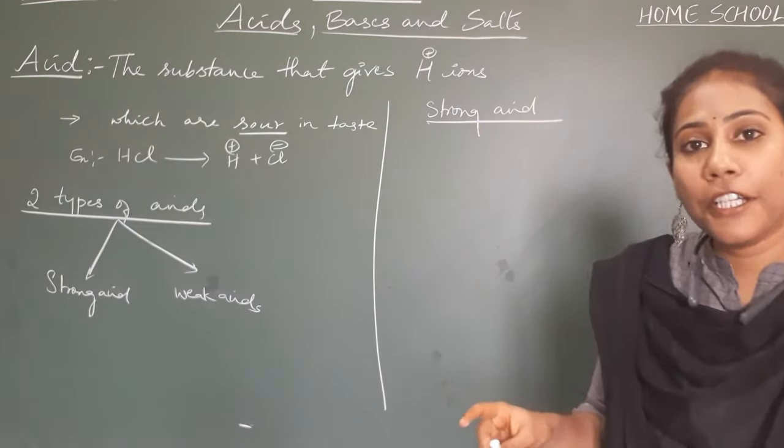The examples of strong bases are: NaOH — sodium hydroxide — is the first and very important example. The second example is KOH — potassium hydroxide. Both are very strong bases. The third and other examples include calcium hydroxide, barium hydroxide, and magnesium hydroxide. These are the strong bases you have to remember.